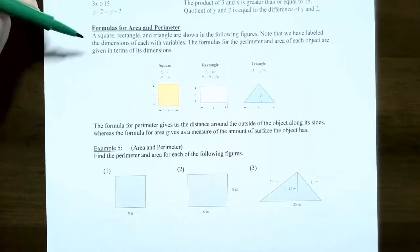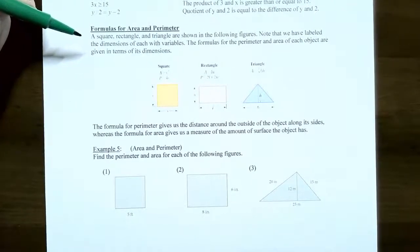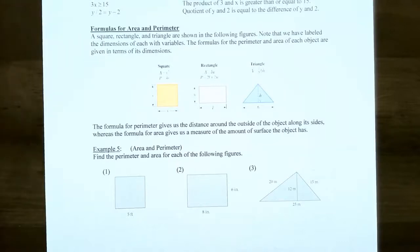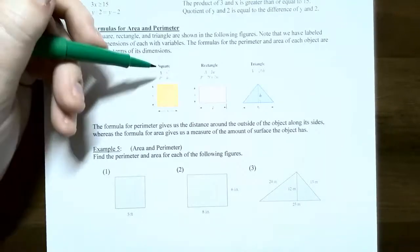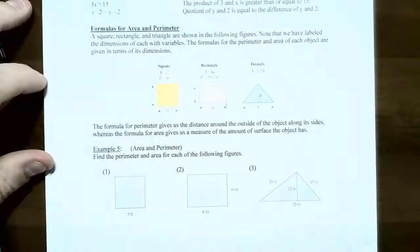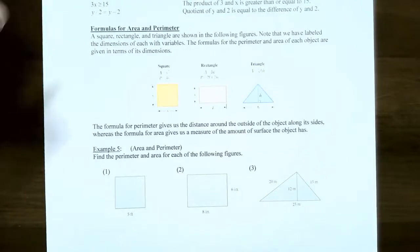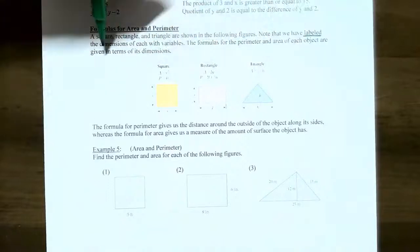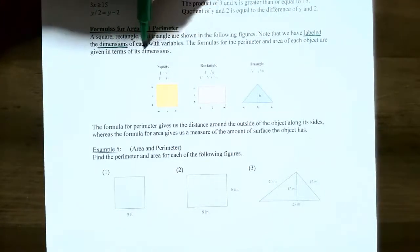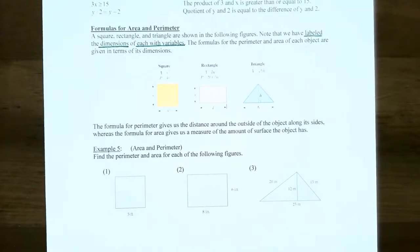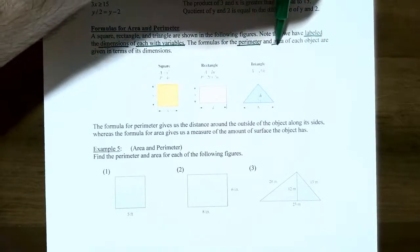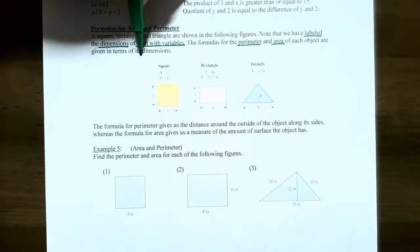A square, rectangle, and triangle are very common geometric shapes that we'll encounter in the course. We're going to talk about perimeter and area for these three common shapes. The diagram has the formula for area and perimeter indicated above each shape, with the dimensions labeled with variables, because the length, width, or height could be any real number. So the formulas will also be in terms of variables.